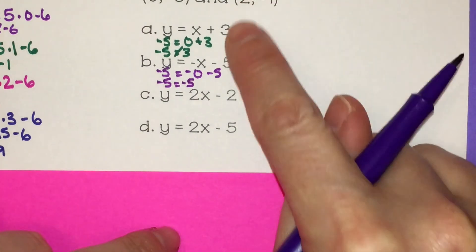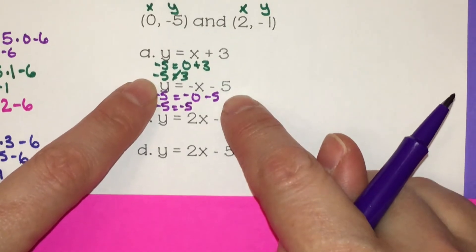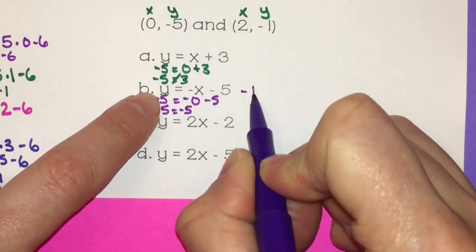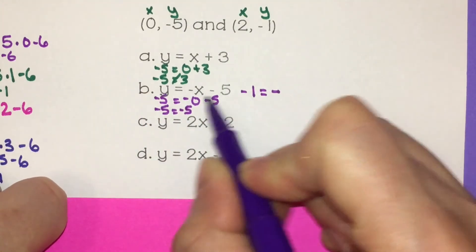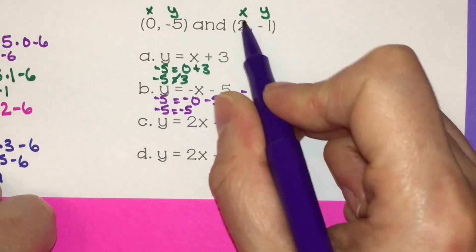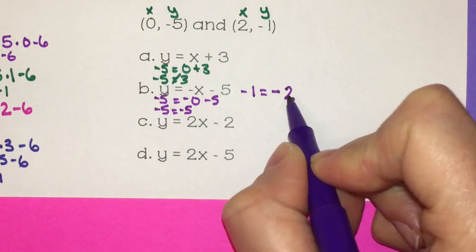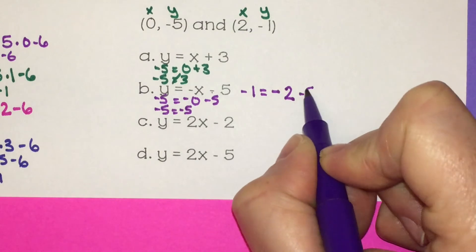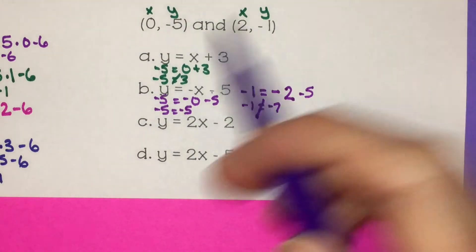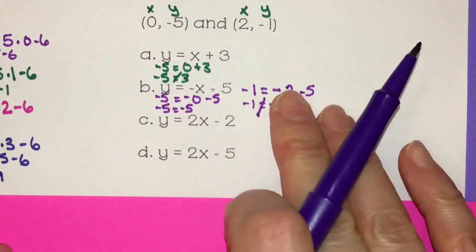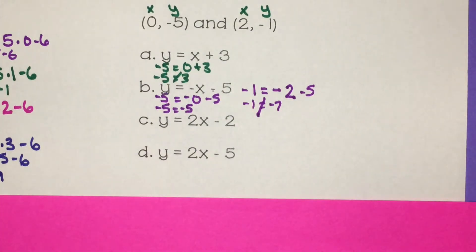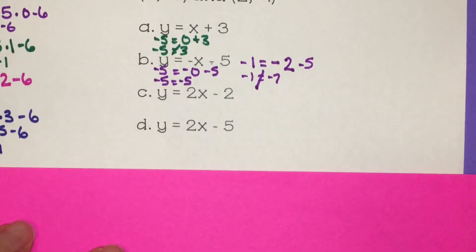So I'm going to plug my second point in for x and y on this one. That means x is 2 and y is negative 1. So y is negative 1 equals negative x value is 2. I had to leave that negative there and then plug in the x value, which was positive 2, which means the result would be negative 2, minus 5. Negative 1 equals negative 2 minus 5 is negative 7 — that one did not work. Because both points didn't work, I know this is not the equation that both points lie on.